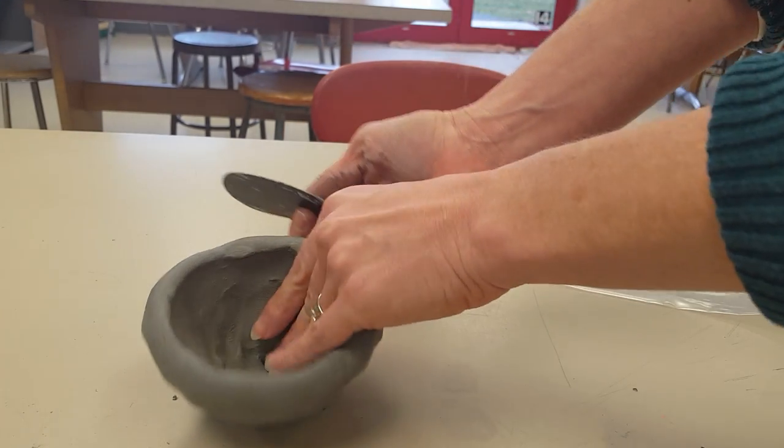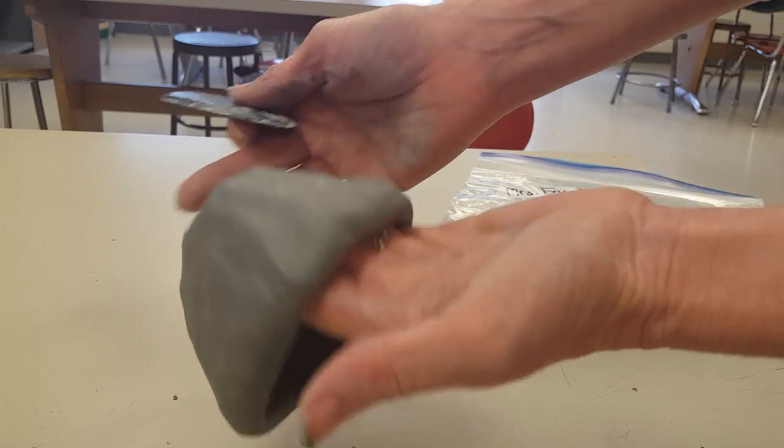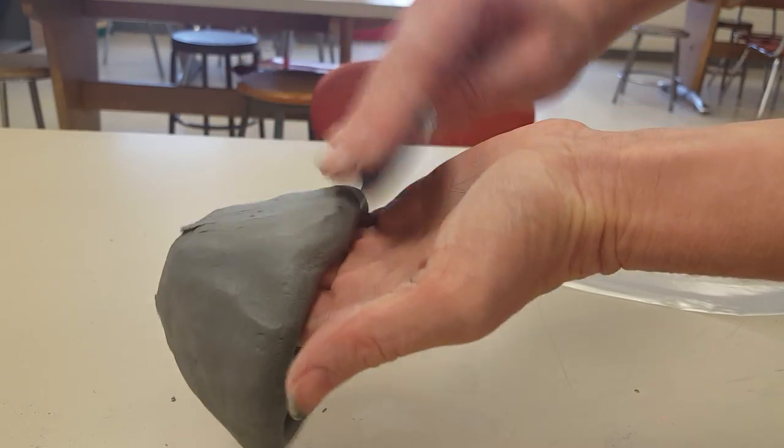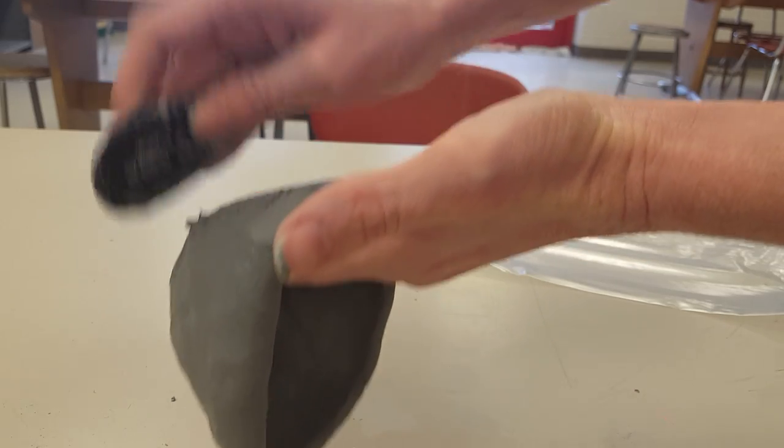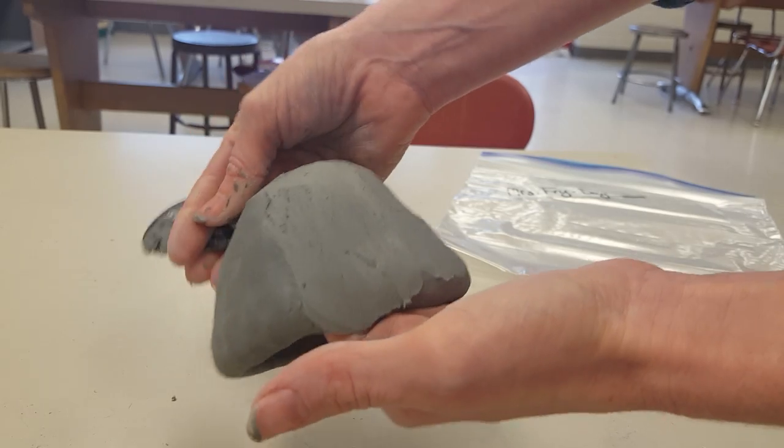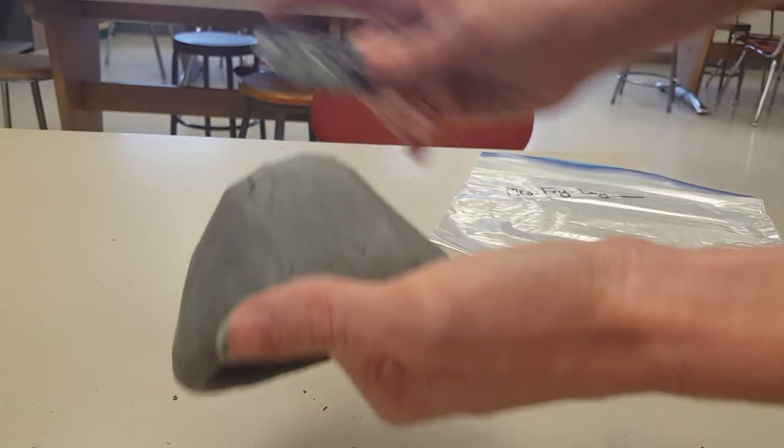Now for my rib, what I'm going to use it for is to smooth out my pot. Notice I put my fingers on the inside of my pot and I use my rib to kind of smooth everything out. You'll get extra things on it, but that's okay, we can just blend them in or wipe them off.